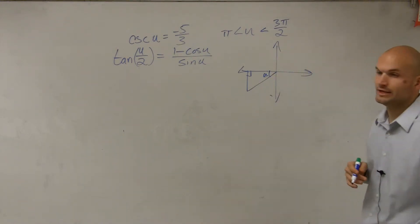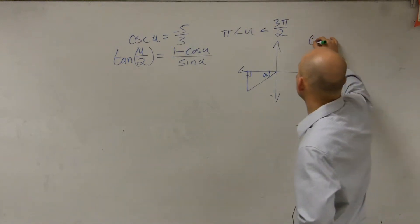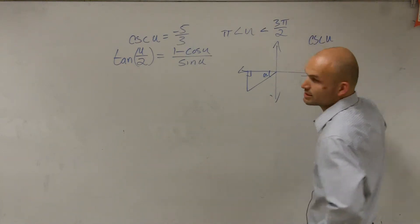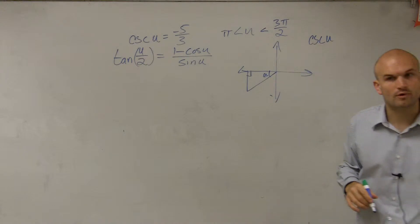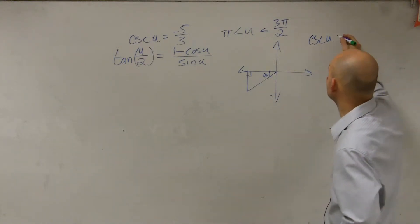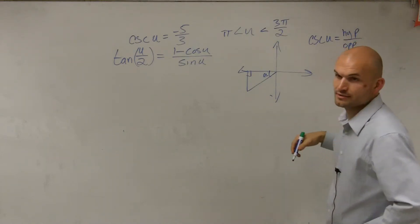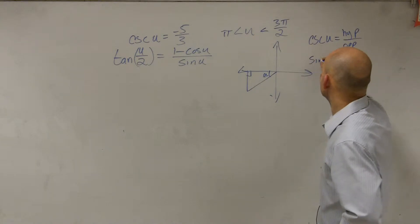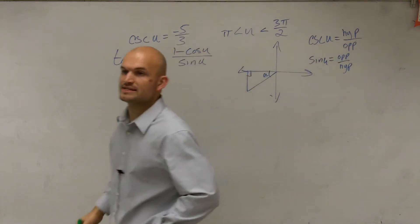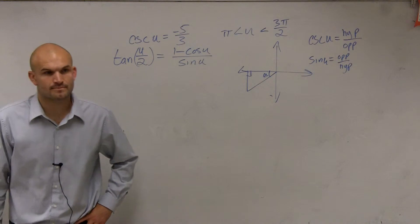Now, cosecant of u equals negative 5 over 3. We need to remember from our trig, what is the cosecant of an angle? What does that represent? That's going to be your hypotenuse over your opposite, right, because sine is opposite over hypotenuse, and sine and cosecant are reciprocals of each other.